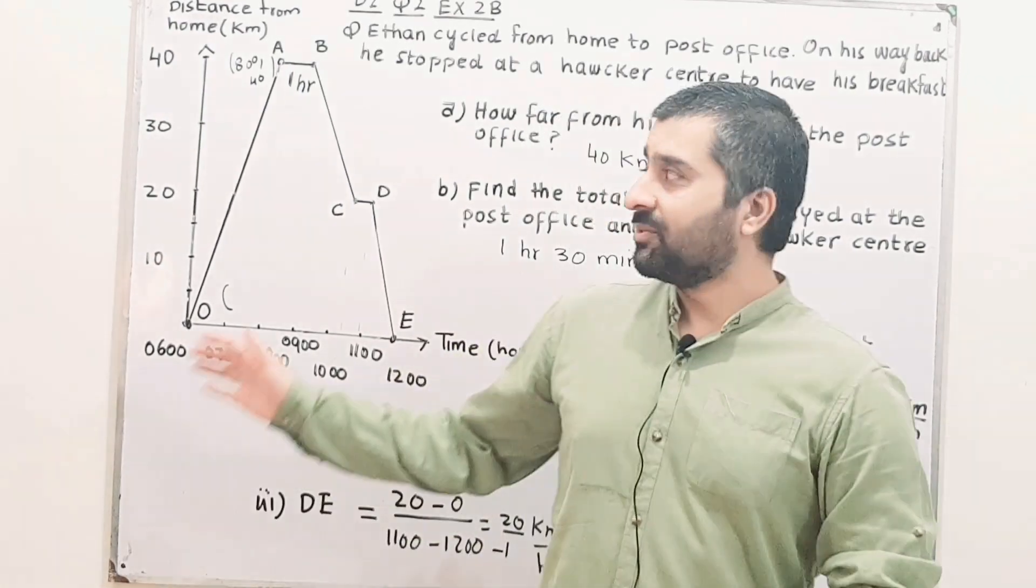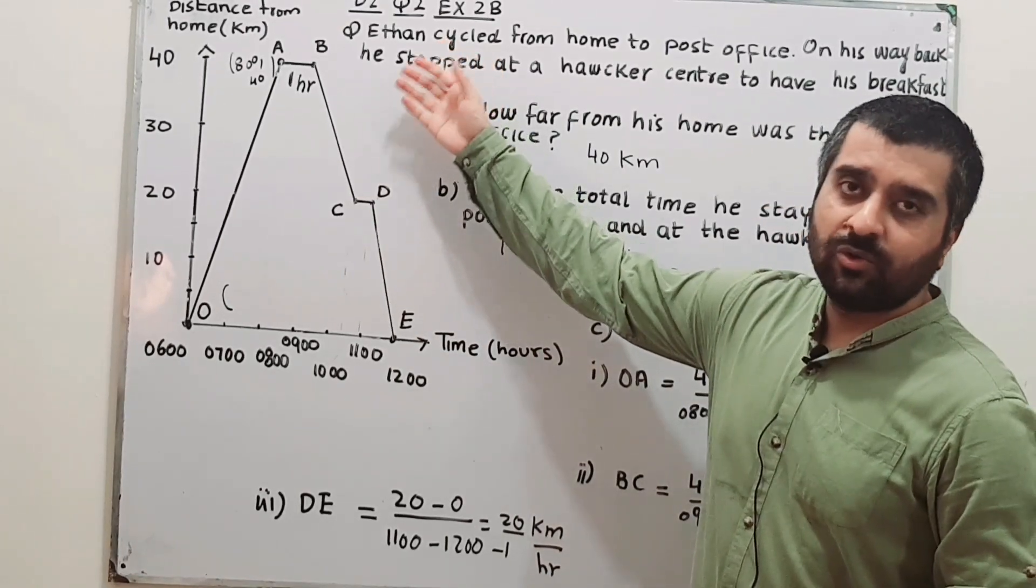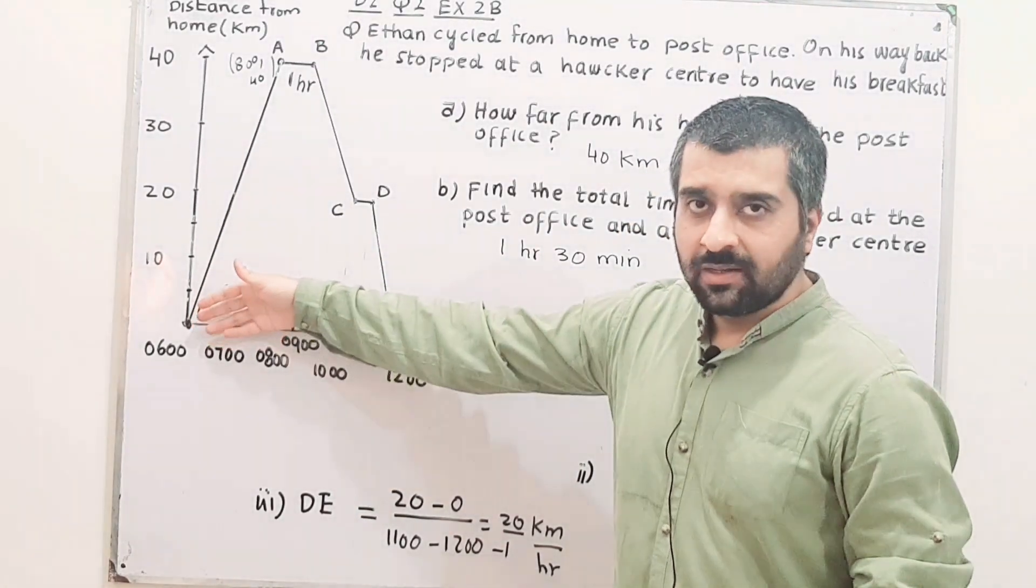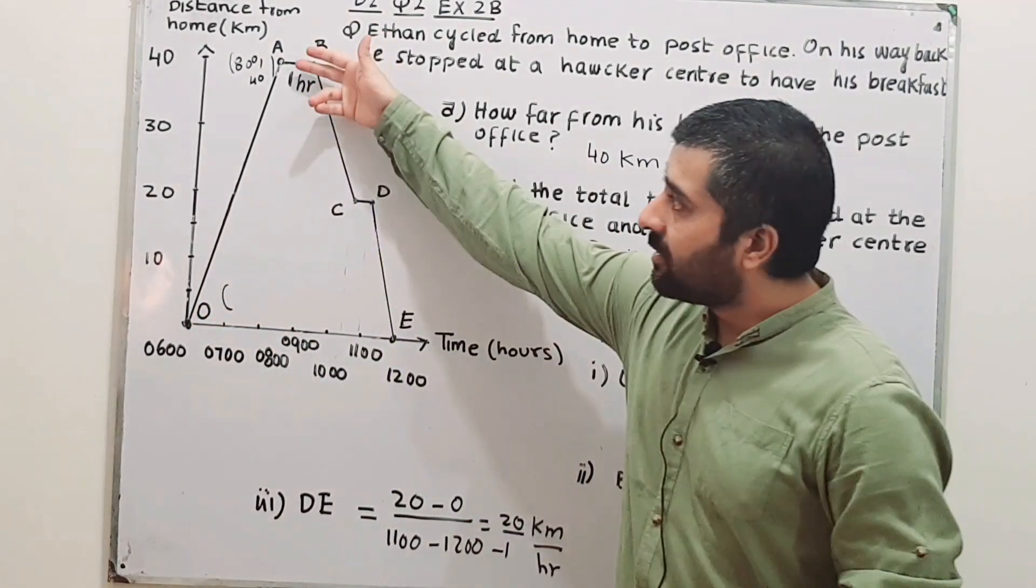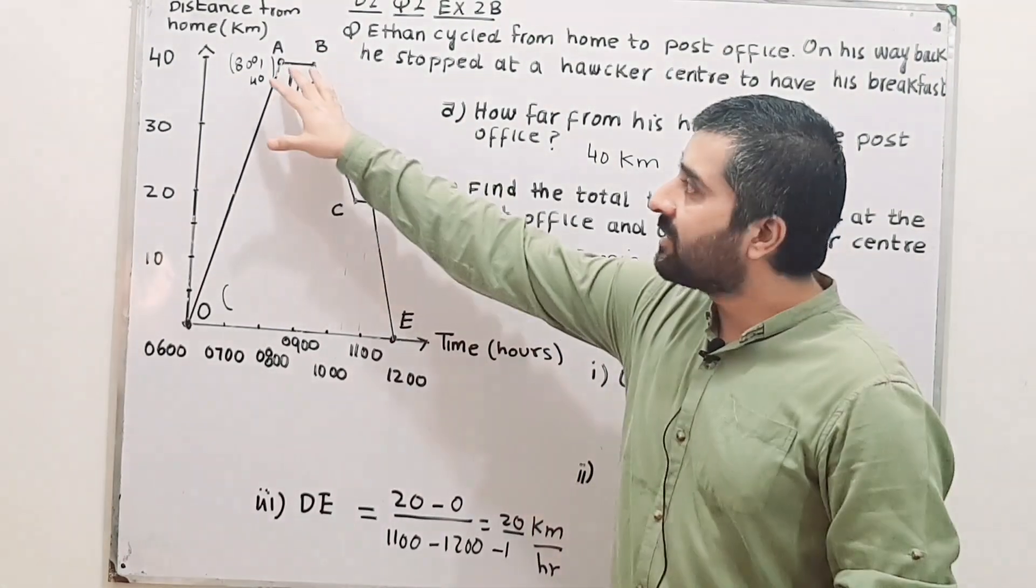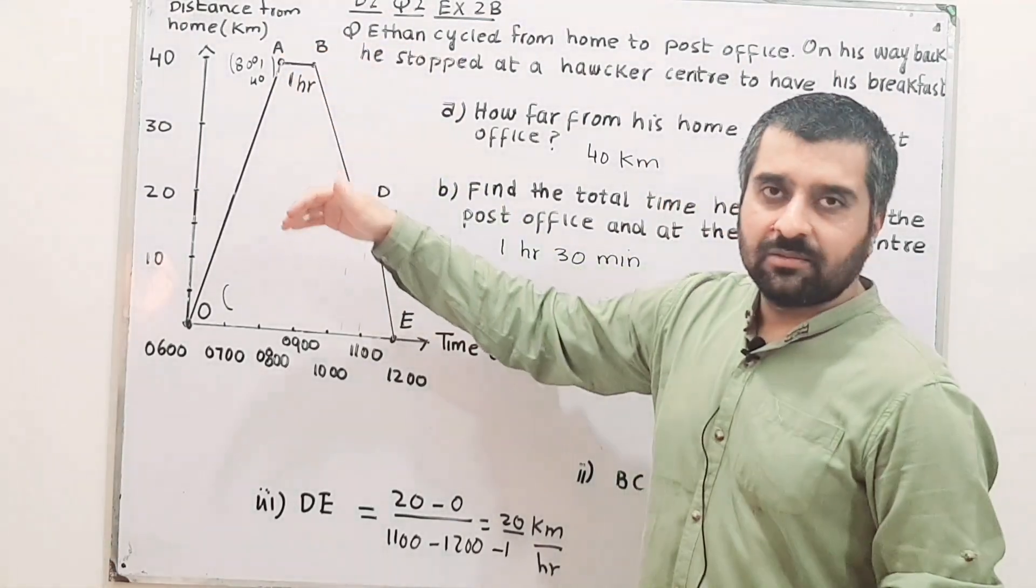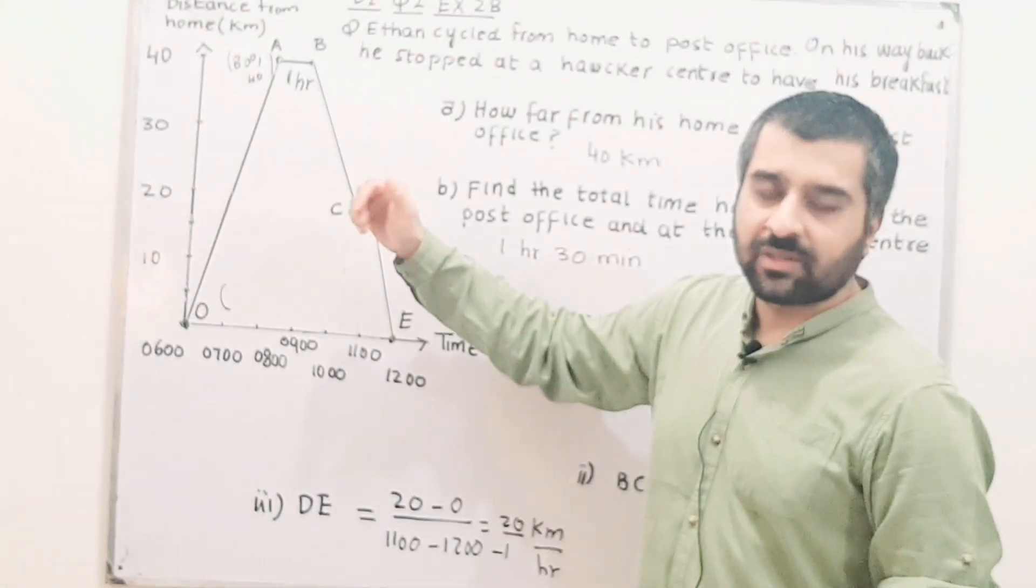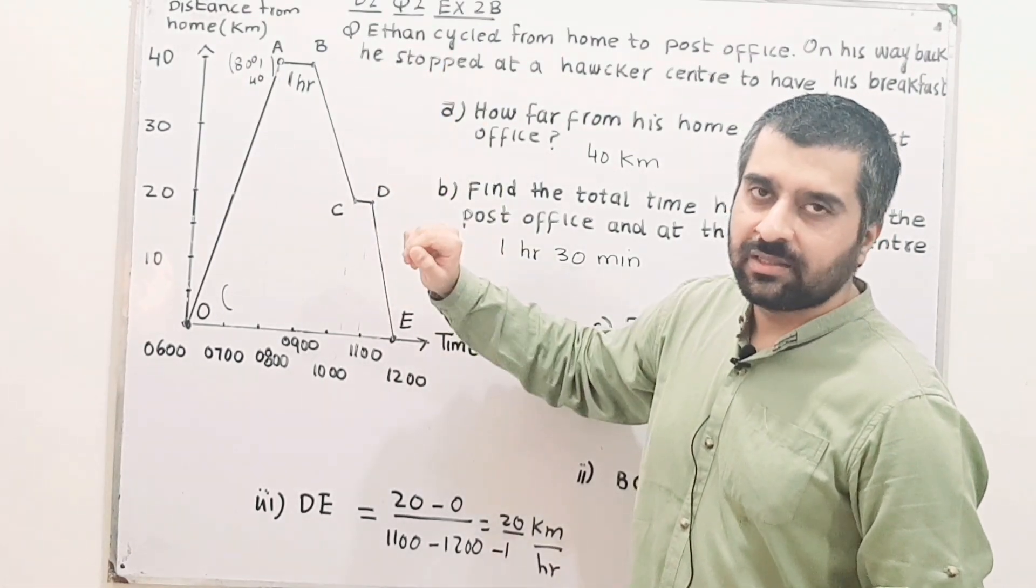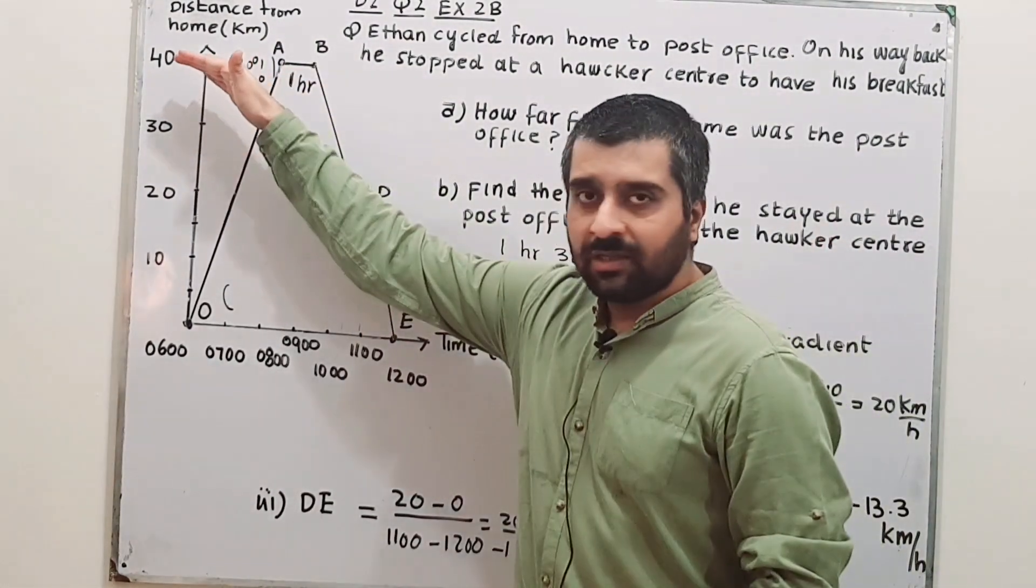This graph shows the journey of Ethan, who started from his home to the post office at point A. Then he stayed some time at the post office, indicated by a horizontal line. A horizontal line means distance is not covered because the starting point and end point have the same distance values.